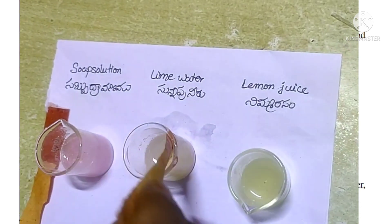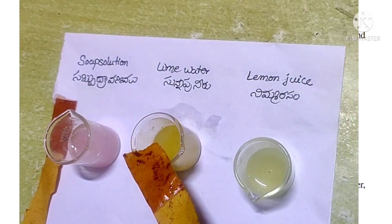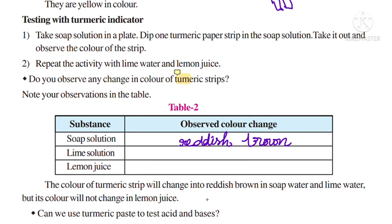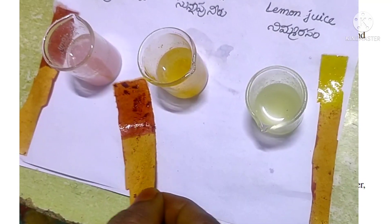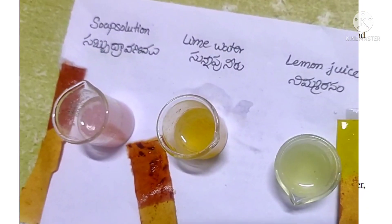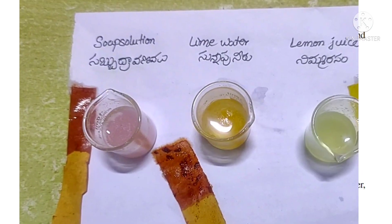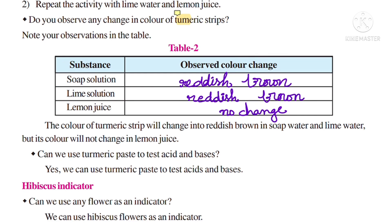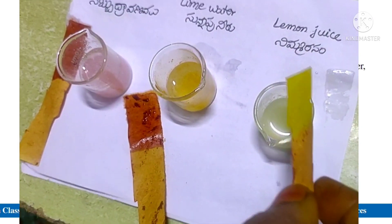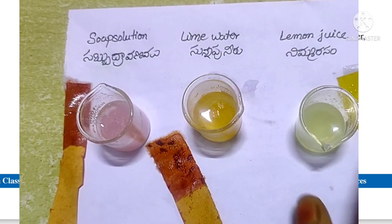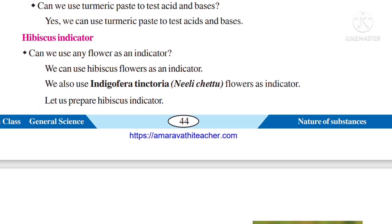Take another turmeric strip and keep it in lime solution — lime means chuna. It will also change to reddish brown color. Then take another turmeric strip and keep it in lemon juice — it will not change any color; it remains yellow. So turmeric strips turn reddish brown with base solutions, but do not change color in acid solutions. Yes, we can use turmeric paste to test acids and bases.